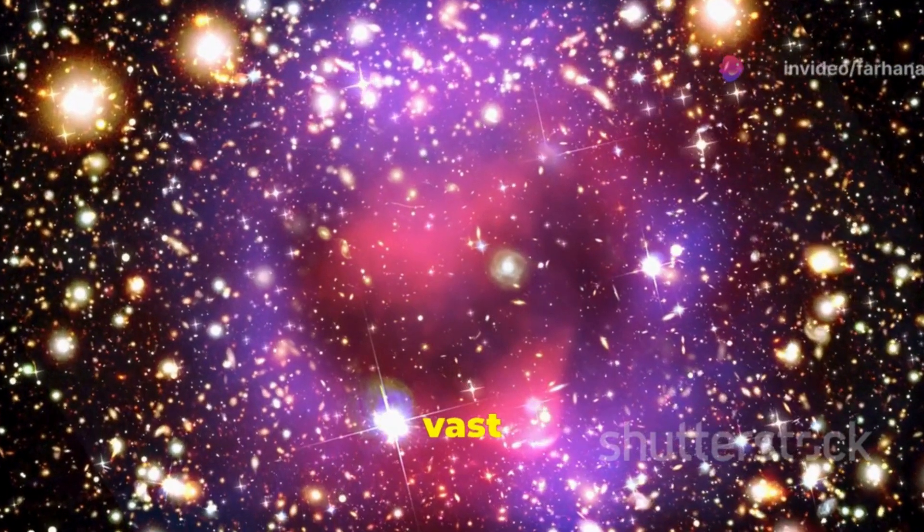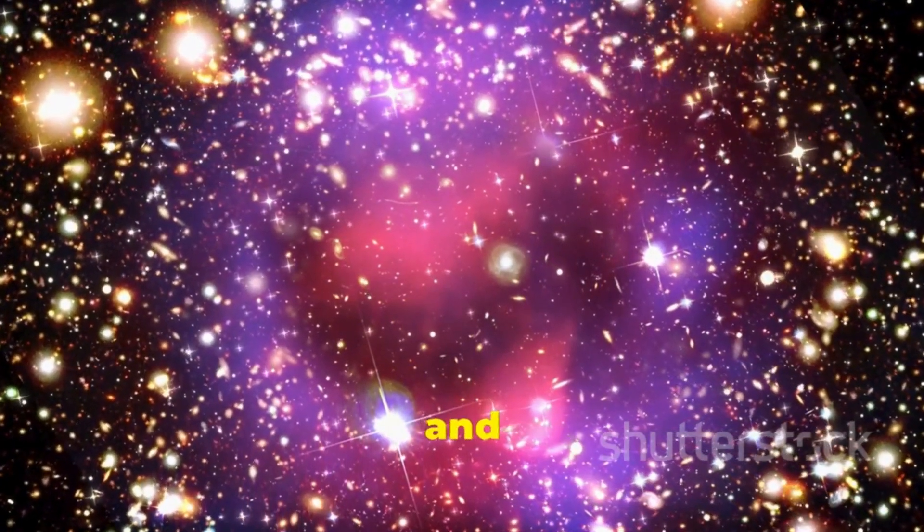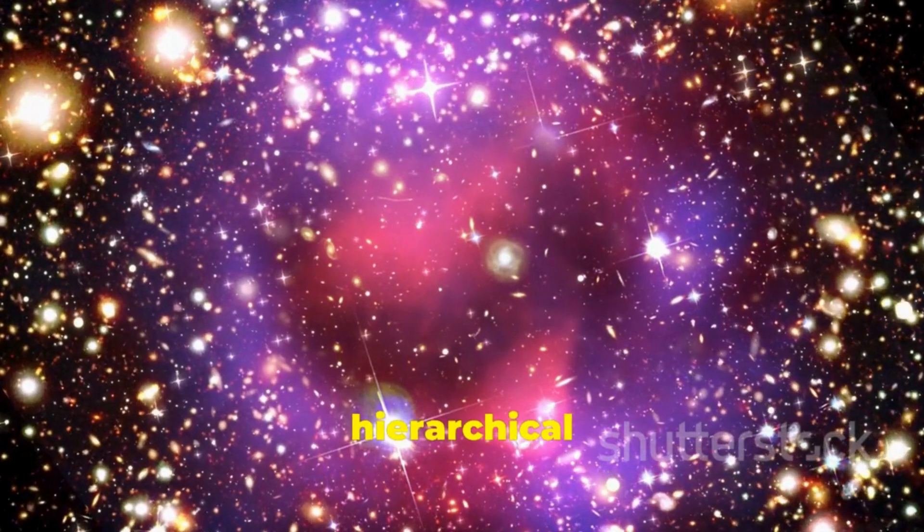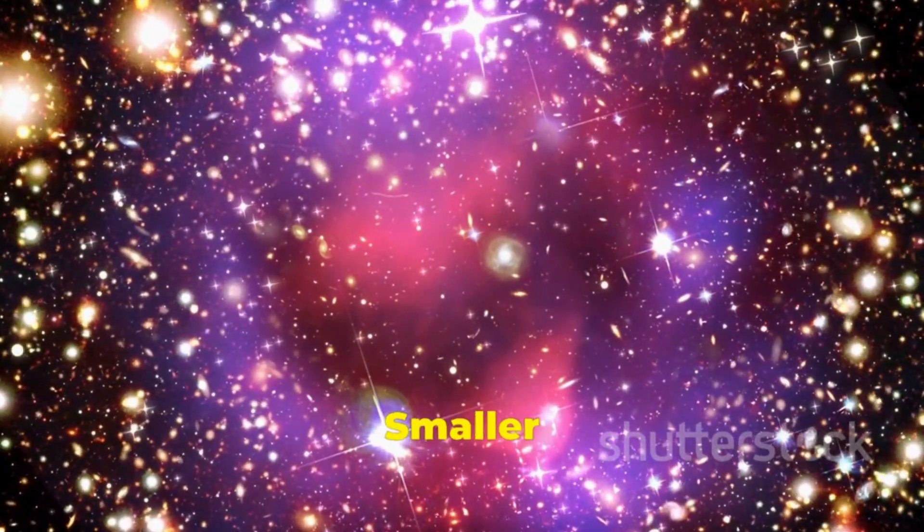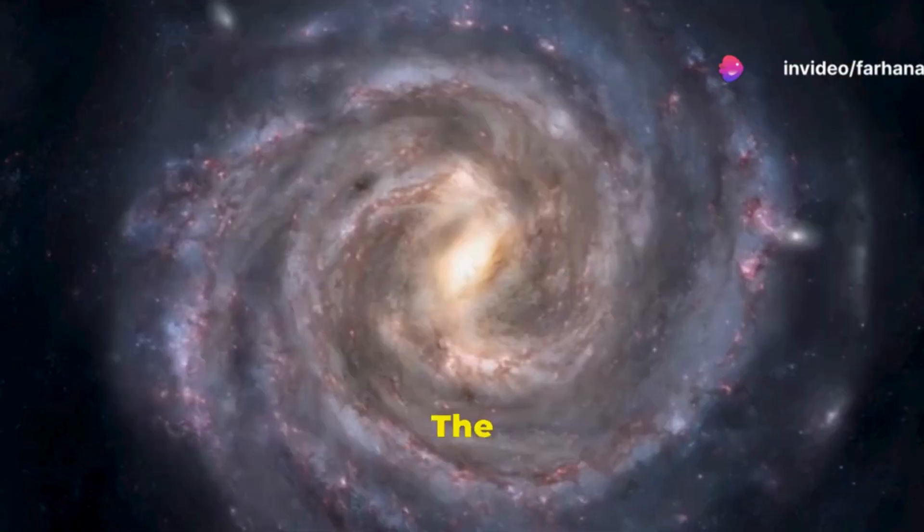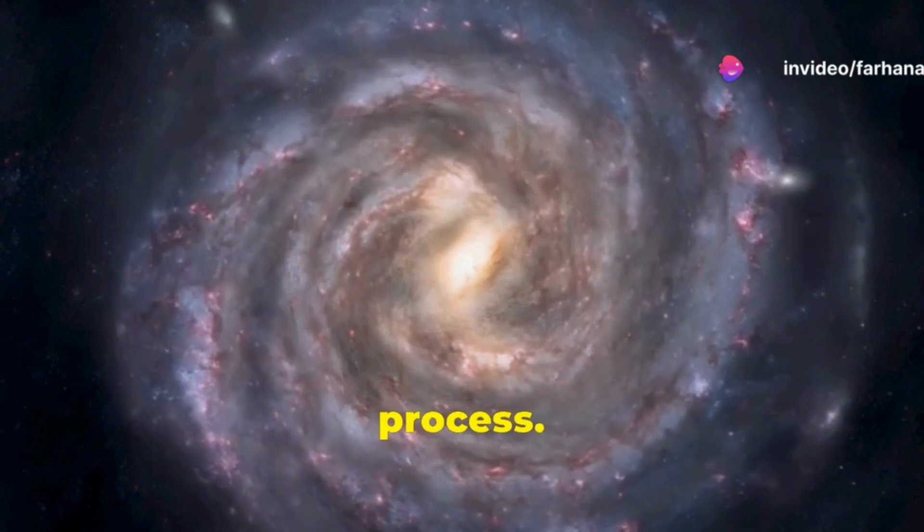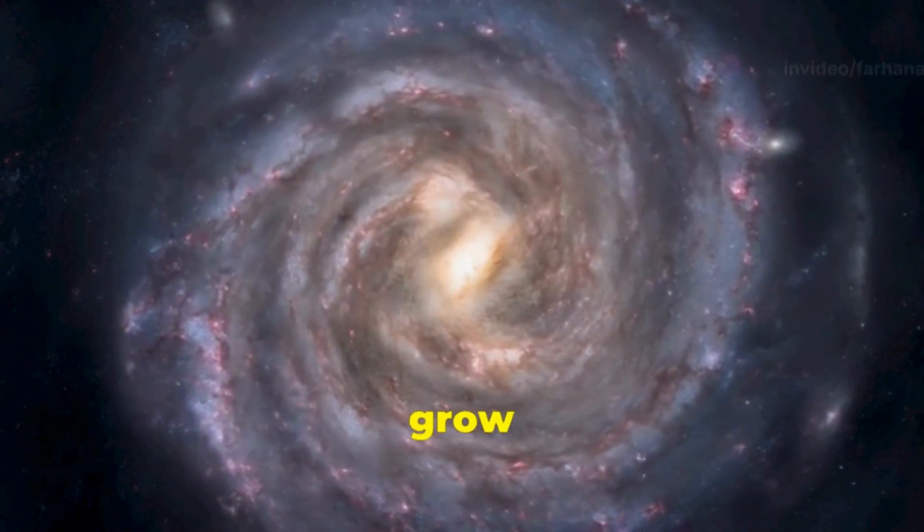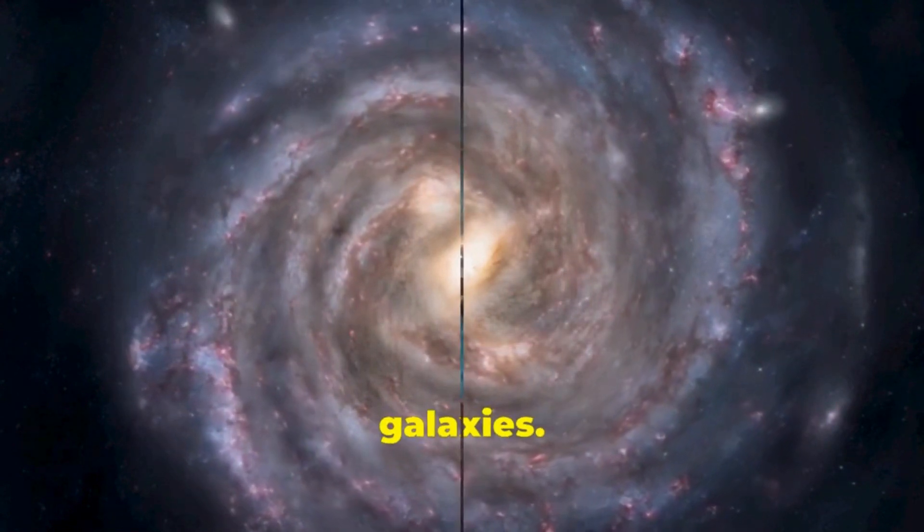Galaxies, vast collections of stars, gas and dust, formed through hierarchical mergers. Smaller galaxies coalesced to form larger ones. The Milky Way, our own galaxy, is a product of this process. It continues to grow by absorbing smaller dwarf galaxies.